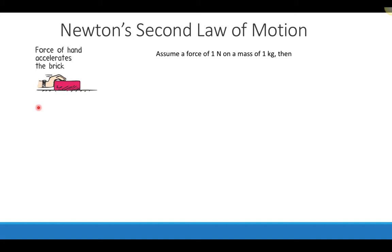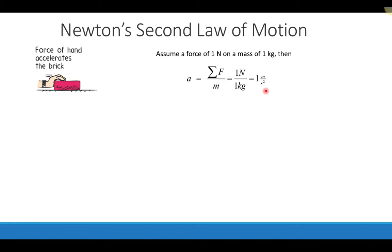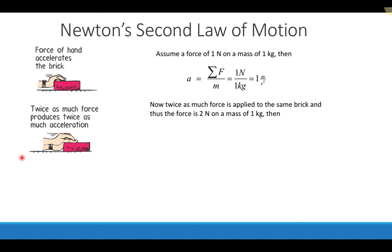Let's look at Newton's second law with some numerical examples. Suppose a hand applies a one-newton force on a one-kilogram brick on a frictionless ice surface. The acceleration equals net force divided by mass: one newton over one kilogram gives one meter per second squared. Now suppose we apply twice as much force — two newtons on the same one-kilogram brick. The acceleration is two newtons over one kilogram, which equals two meters per second squared. That's twice as big as the original acceleration.